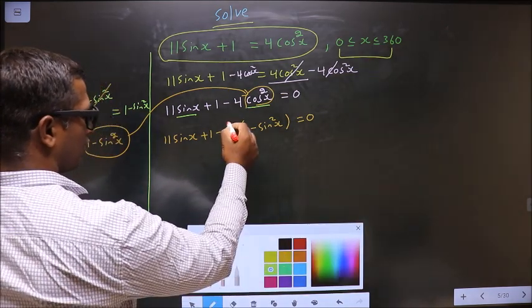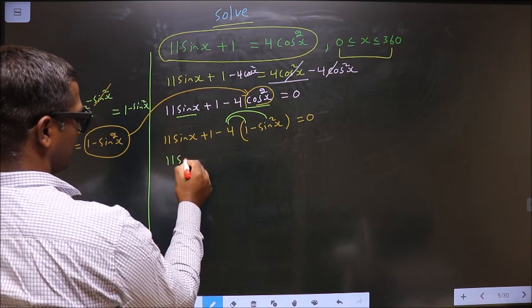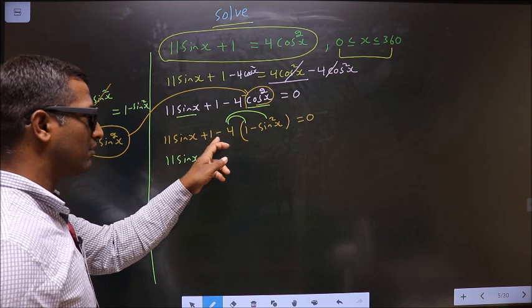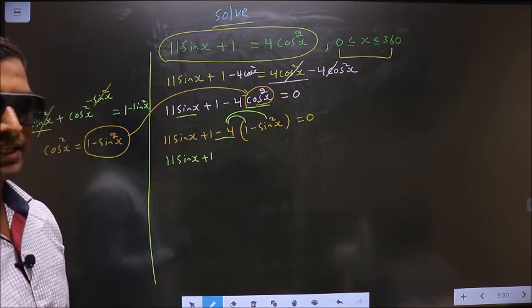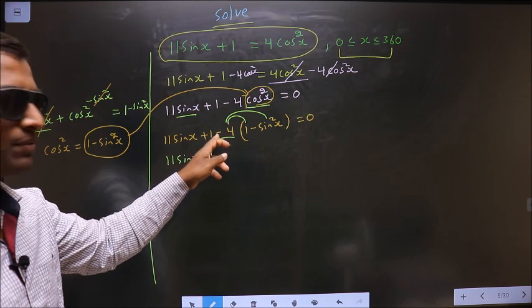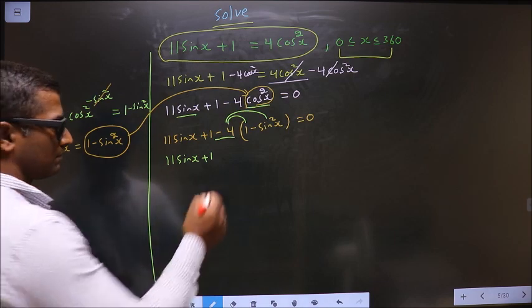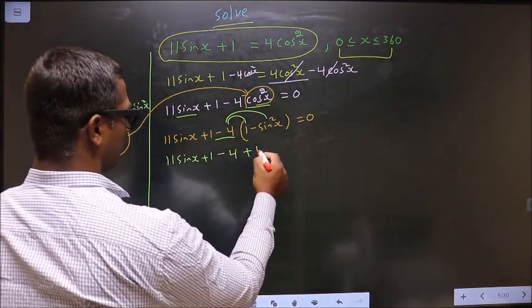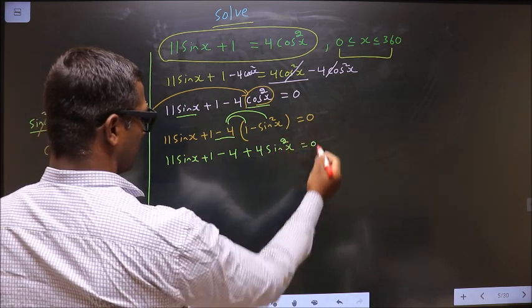Now, you open up the bracket in this way. So, 11 sin x plus 1. See, you have to multiply with minus 4. Many do the mistake, they neglect negative sign. You should not do that. You should open up the bracket with minus 4. So we get minus 4 minus minus plus 4 sin square x equal to 0.